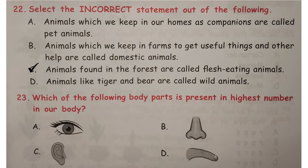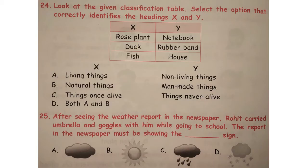Which of the following body parts is present in the highest number in our body? Answer is option D, that is fingers.